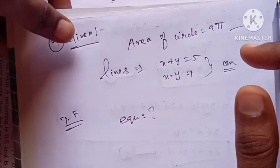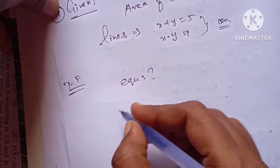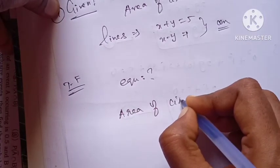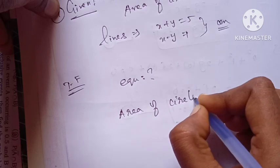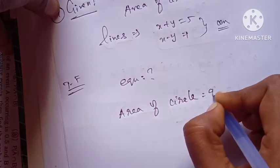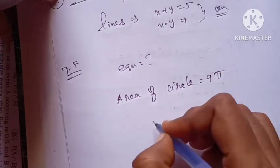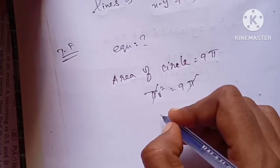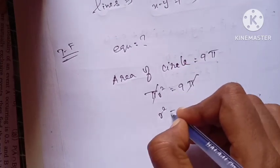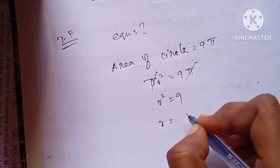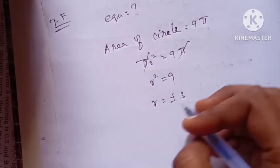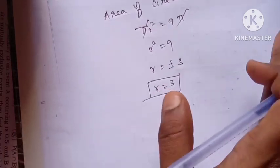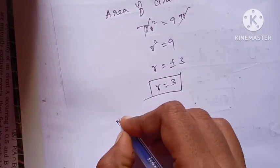First, I will find the radius from the area of the circle. We know the area of the circle is 9π, so using the formula πr² equals 9π, both sides cancel π, giving r² equals 9, and taking the square root, r equals 3.